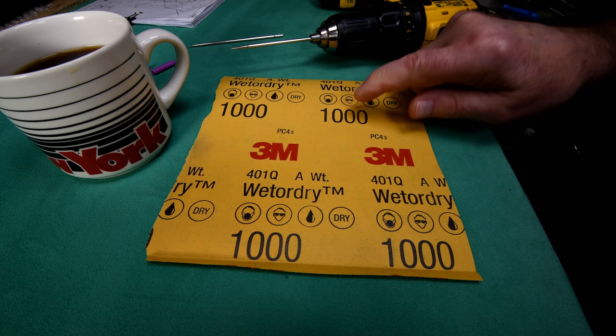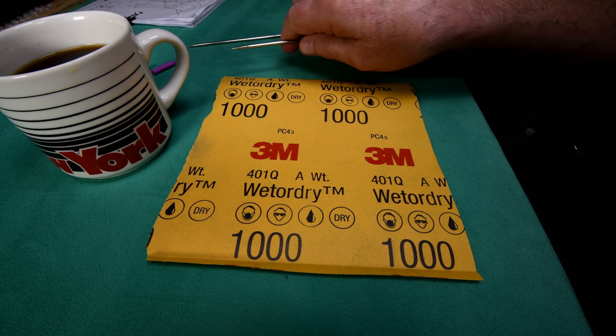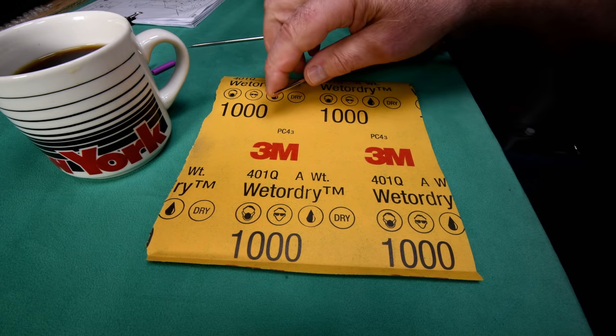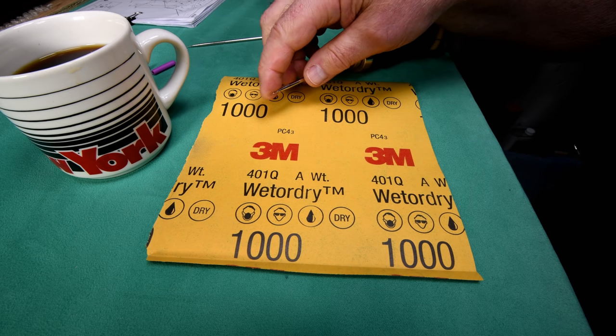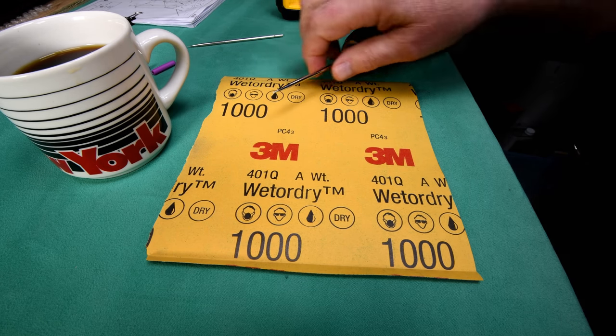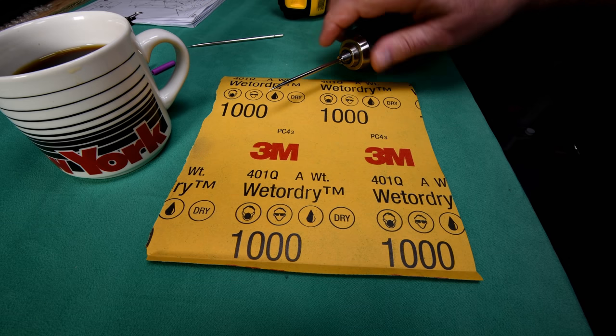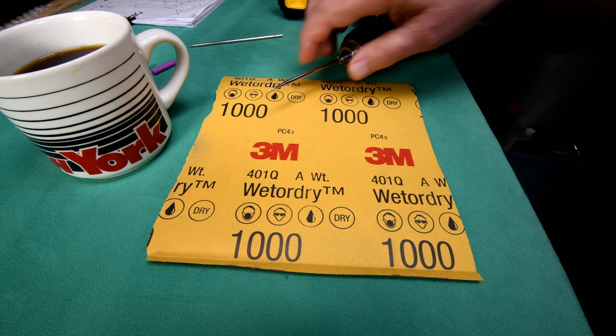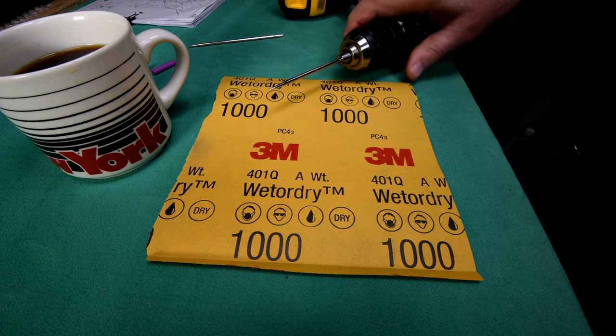Now we'll get the burrs off the bad one. I am fully aware we are probably going to be taking the chrome plating off of the tip here. But according to the packaging, this is supposed to be stainless steel, so I'm not too worried about it rusting on us.